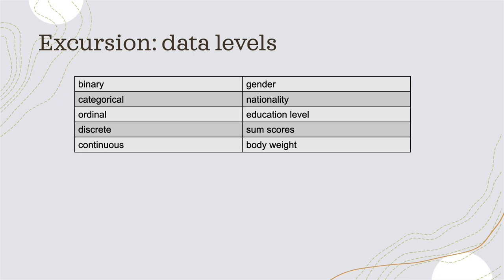The next level is the categorical data level, meaning we have multiple categories that are all equal in their meaning. For example, nationality — taking European countries, we might rate our variable as German, Dutch, Spanish, or French.